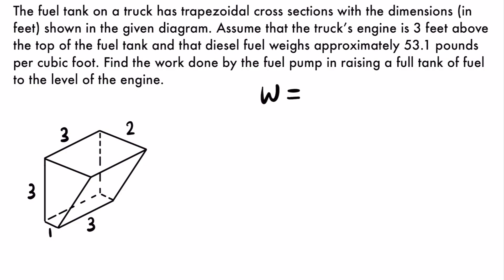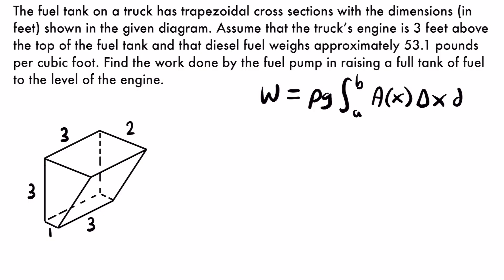The work done is equal to the weight density of the liquid times the integral from a to b of the cross-sectional area of a slice of the liquid in the tank, times delta x — which is the distance that the liquid needs to be pumped — times dx, which represents the height of a particular slice of liquid in our tank.